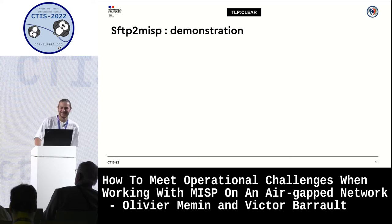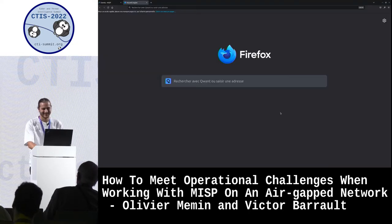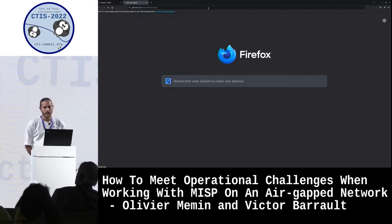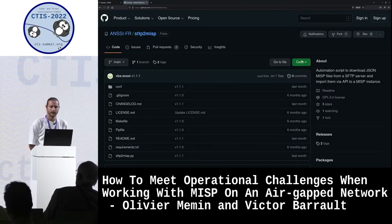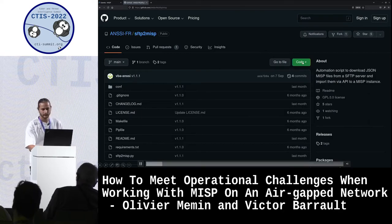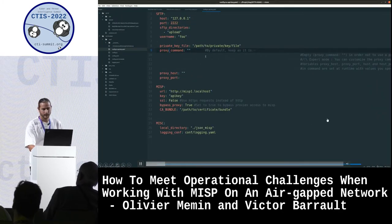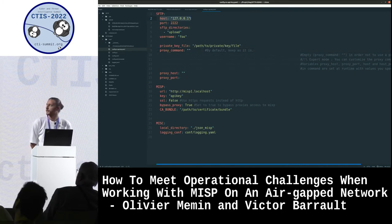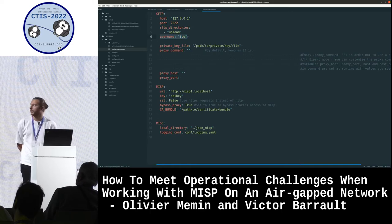Now the demonstration — it will be a video. On your favorite web browser, you can go to github.com/ncfr/sftp2misp and simply clone the repo on your laptop or server. In the configuration directory, you have to set up at least one configuration file in the INI format. First, there is the SFTP configuration with host, port, the remote directories you want to download, username, and if needed, the path to the private key file.